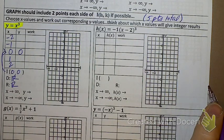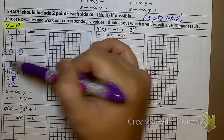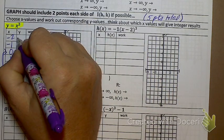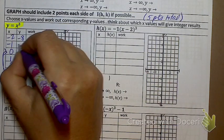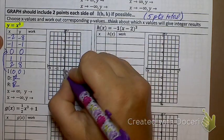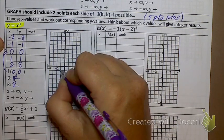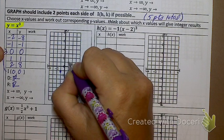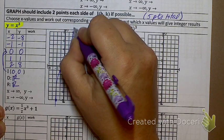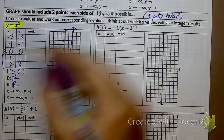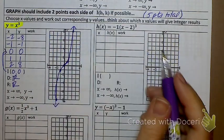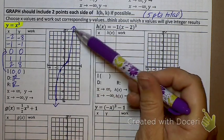Now that I've filled in my x-values, I plug them in to get the y-values. Negative two cubed is negative eight, negative one cubed is negative one, zero cubed is zero, one cubed is one, two cubed is eight. Plotting those points: (−2, −8), (−1, −1), (0, 0), (1, 1), (2, 8). This is what the mother function of all cubics looks like — five points graphed.